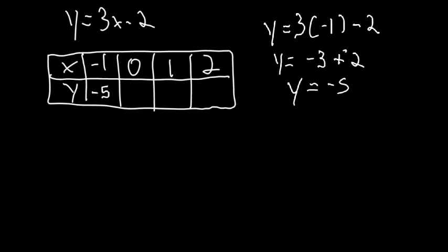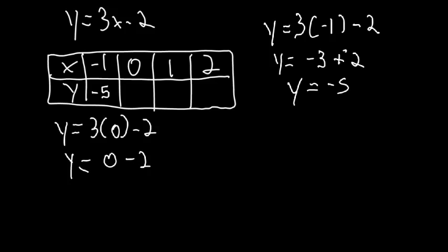Now repeat the process for the next one. y equals 3 times 0 minus 2. 3 times 0 is 0, and 0 plus negative 2 equals negative 2. So our second output is negative 2.